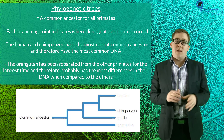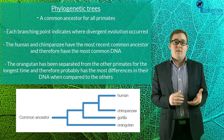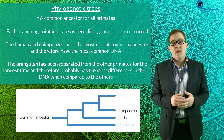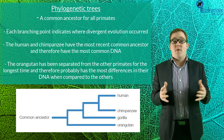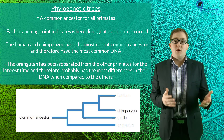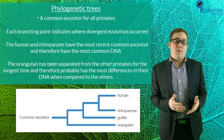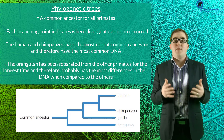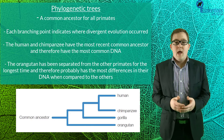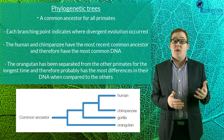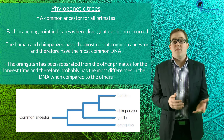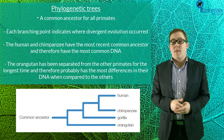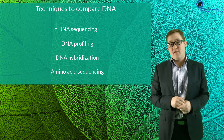Looking at this tree, we can now decipher that there's a common ancestor for each of the four primates, that each branching point indicates where species of primates separated from other groups, that humans and chimpanzees share the most recent common ancestor and thus would be expected to have the most DNA in common, and that the orangutan has been separated from the other three primates for the longest period of time and probably has more differences in their DNA when compared to the other primates. Now let's take a look at techniques used to actually compare the DNA in the first place.